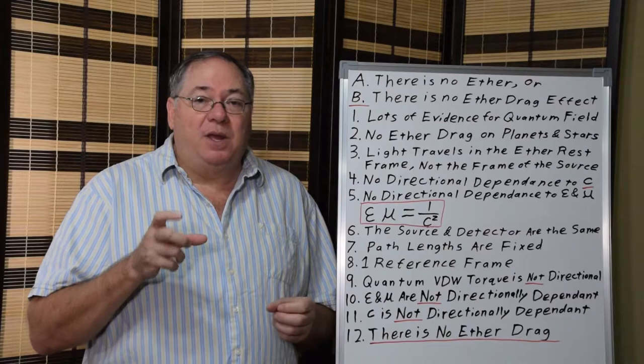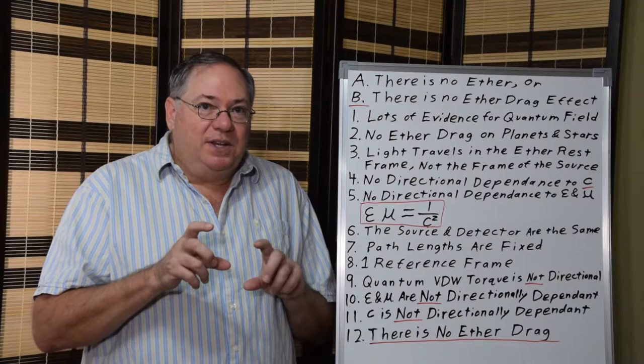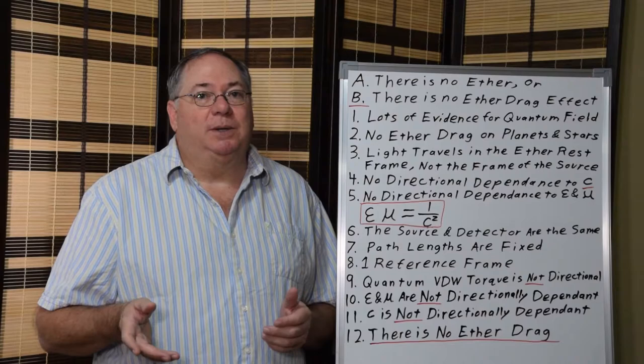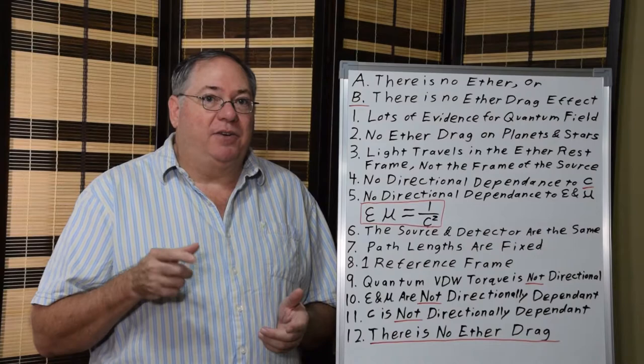And this torque prevents these dipoles from rotating or any charged object or any object period from moving through space. It will face resistance because the quantum field dipoles don't want to rotate. They want to stay in their position. And when they do rotate, they cause other quantum dipoles to rotate. So this mutual resistance to rotation causes Van der Waals torque, and this torque resists all forms of linear and rotational motion in space.